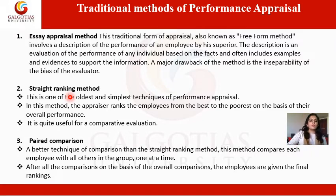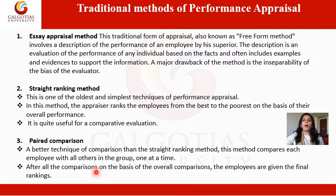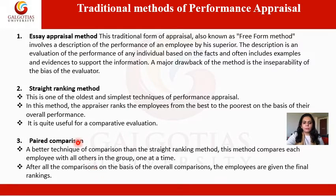Paired comparison is a better technique than straight ranking because the chances of bias are reduced. In this method, each employee's performance is compared with every other group member one by one. For example, with five employees A, B, C, D, E — A is compared with B, then with C, D, and E. Similarly, B is compared with A, C, D, and E. It is therefore a comparative evaluation method.